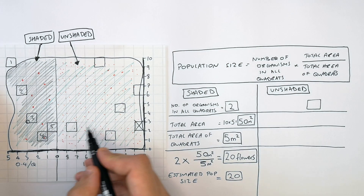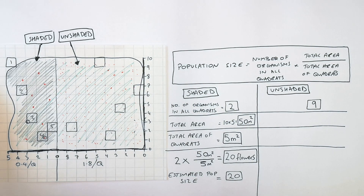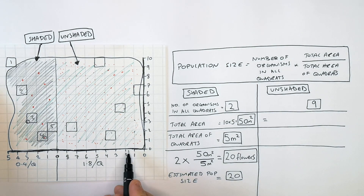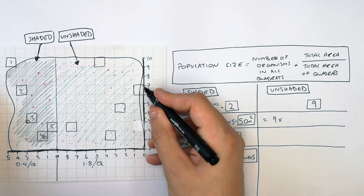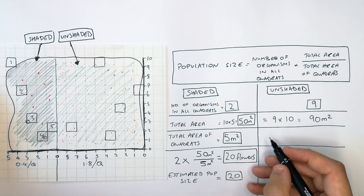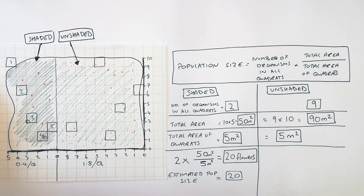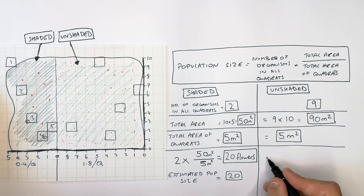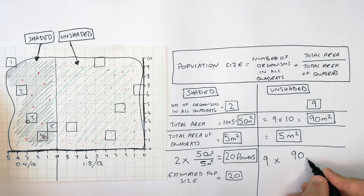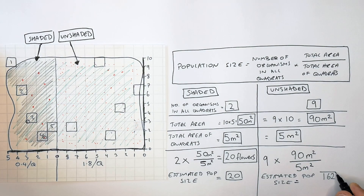In the unshaded region, the total number of organisms in all quadrats is 9 plants. The total area is 10 m × 9 m = 90 m². The total area of quadrats remains 5 m². Using the equation: 9 × 90 ÷ 5 gives an estimated population size of 162 plants.